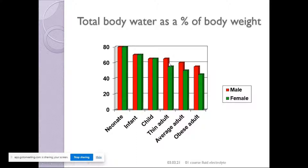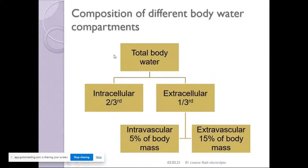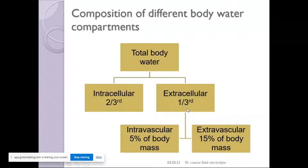By and large, 80% in a neonate and 60% is the rough figure taken for an adult. Of this total body water, two-thirds is intracellular — so 40% of an adult's body weight is water inside the cells — and only one-third is outside. Of that 20% extracellular, 15% is in the extravascular compartment and only 5% is in your blood vessels.